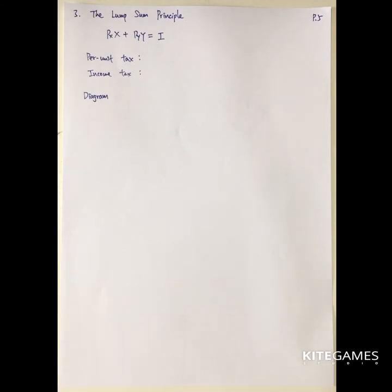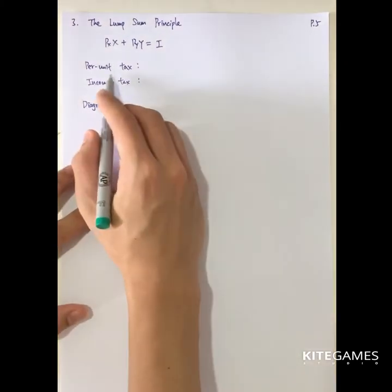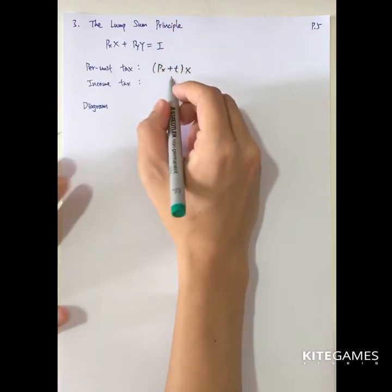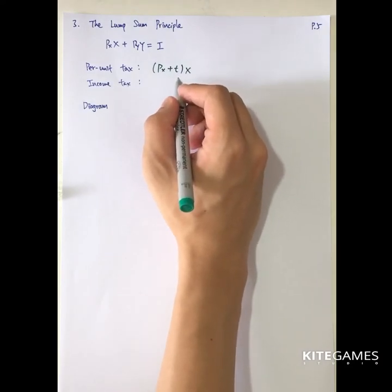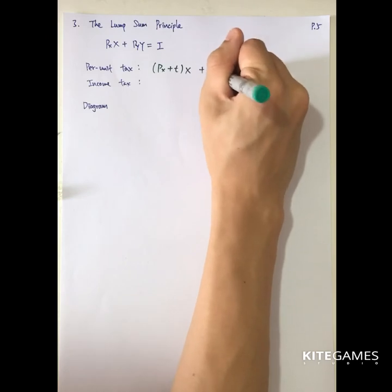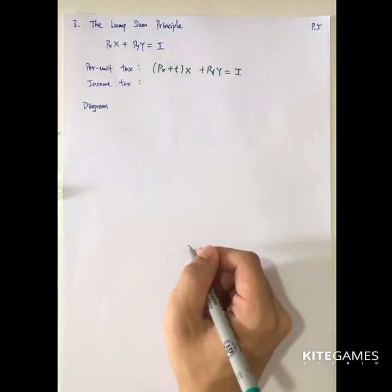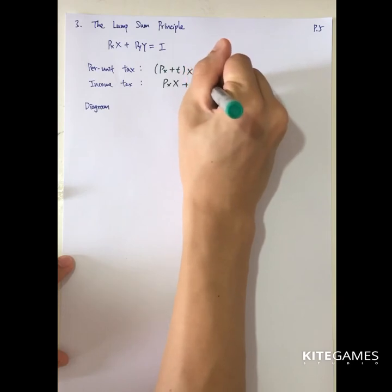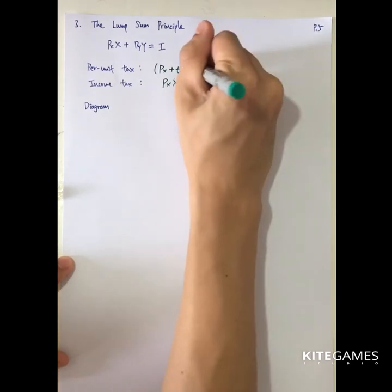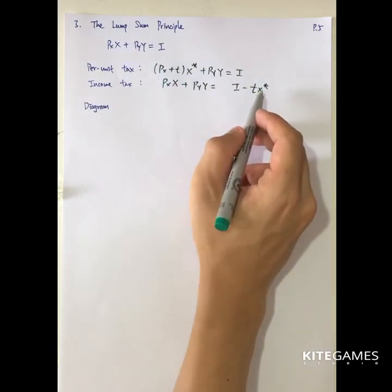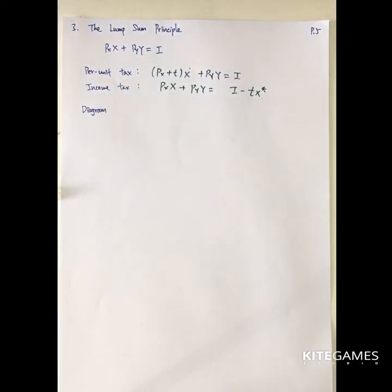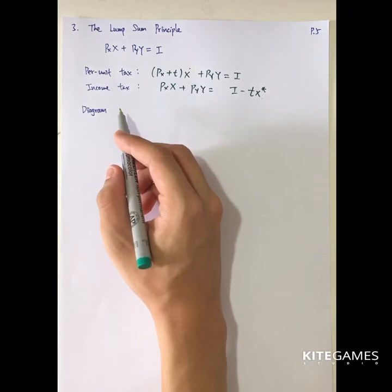We can use the indifference curve analysis to show this result. The per unit tax is the tax charged on the goods — say good x is charged at tax rate t. So the budget constraint will change accordingly. If the amount of income tax is the same, the budget constraint becomes i minus tx, and you need to find the optimal x star. As a result, you can get the same amount of tax. In this case, the income tax can generate higher utility than the per unit tax.